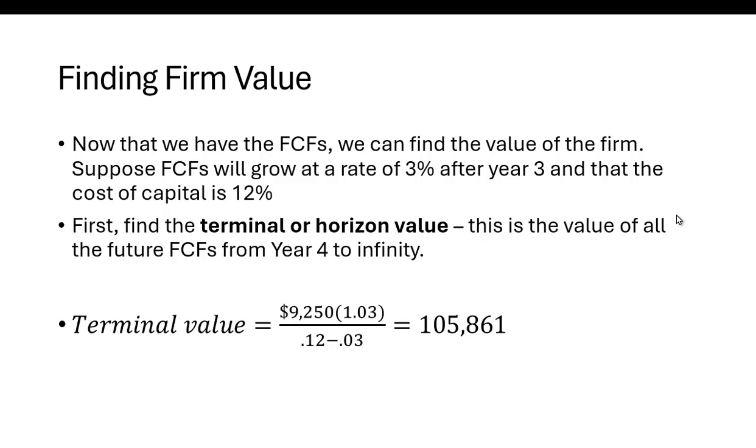Remember, we have the cash flows from years one, two, and three, but the project doesn't stop there. We're going to assume that these cash flows keep going on. And the assumption here is that the year three cash flow will start growing at a 3% rate every year forever. So this is just like that dividend discount model. We're going to take that year three cash flow, multiply it by 1.03 because we need the free cash flow one period in the future, and we divide it by the cost of capital minus the growth rate. And we get 105,861.